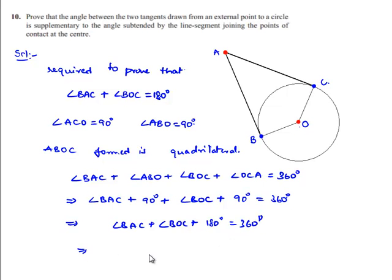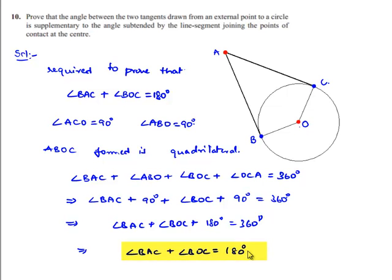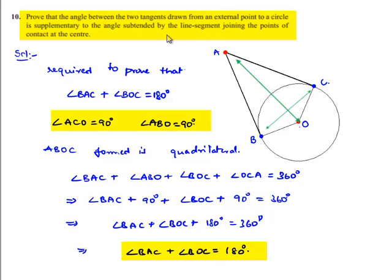Therefore, angle BAC plus angle BOC plus 90 plus 90 equals 360 degrees, which gives angle BAC plus angle BOC plus 180 equals 360 degrees. That implies angle BAC plus angle BOC equals 180 degrees. Therefore, the angle between the two tangents is supplementary to the angle subtended by the line segment joining the points of contact at the center. This is the required proof.